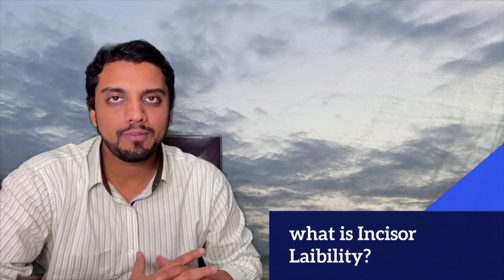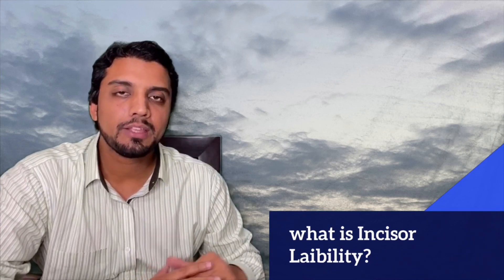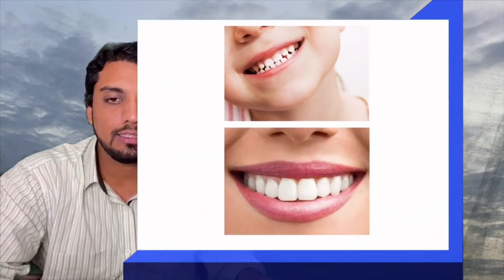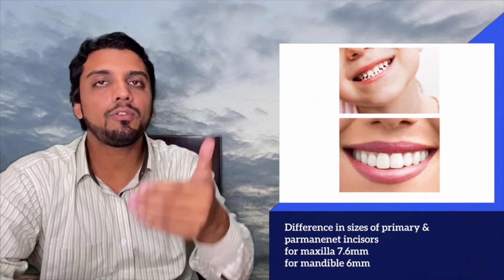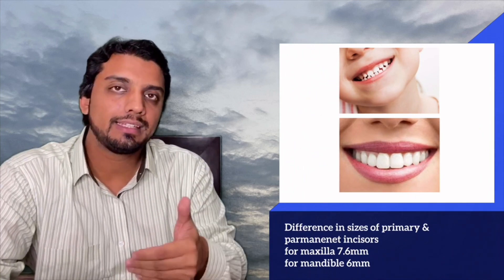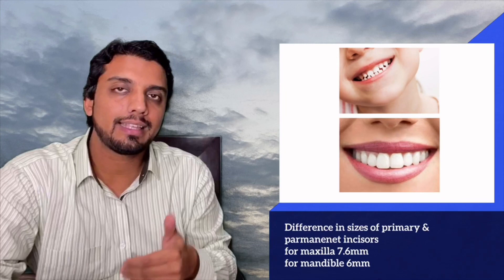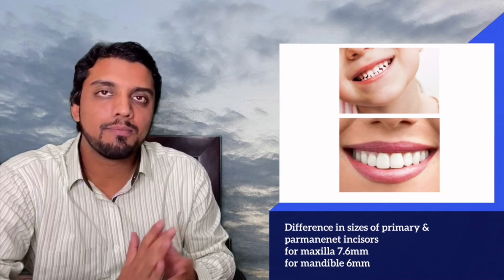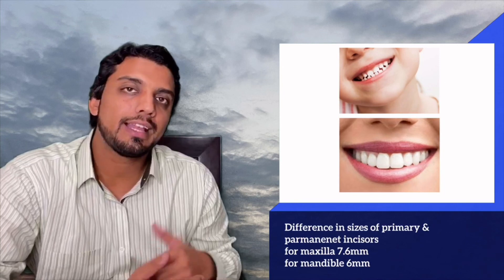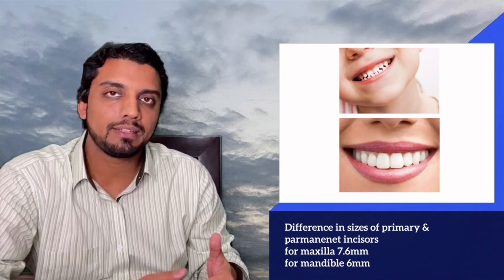Hello everyone, my name is Dr. Adesar Jafri and I'm a consultant orthodontist. In this video I will be discussing what is the incisor liability. As you can appreciate in this photograph, the permanent incisors are increased in the mesiodistal dimension and are much larger in size compared to the primary incisors. This difference in the sizes of the primary incisors and the permanent incisors is called the incisor liability. The permanent incisors of the maxilla are much larger in size and their mesiodistal dimension is increased, giving a greater incisor liability in the maxilla of 7.6 millimeters.